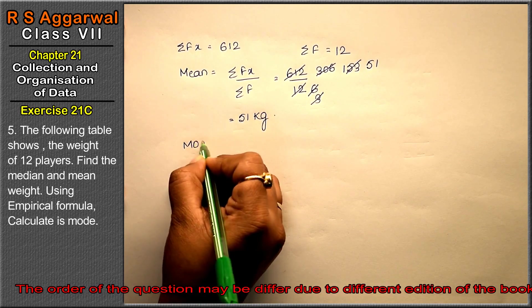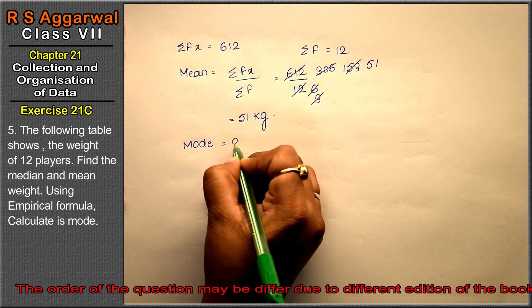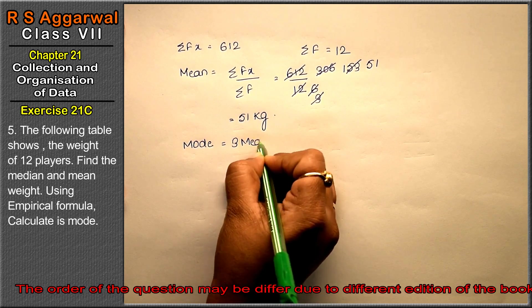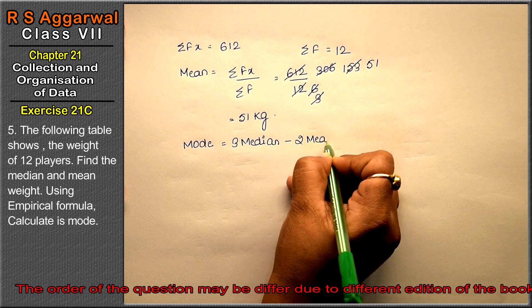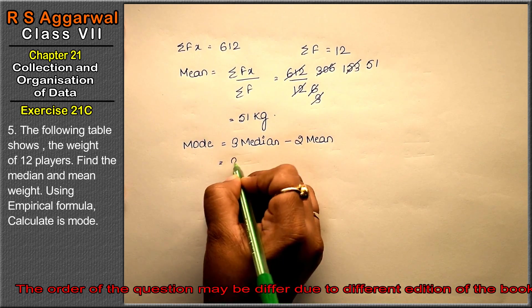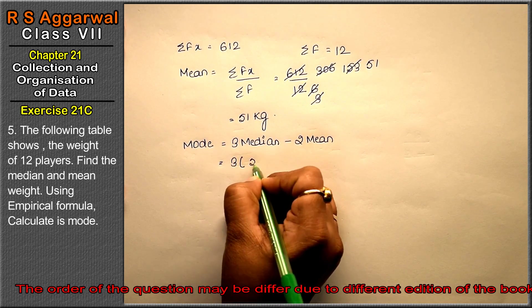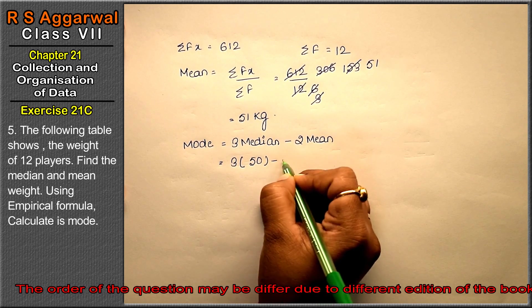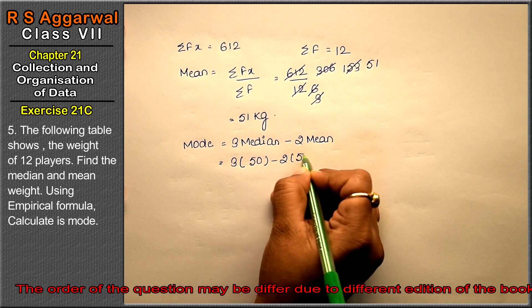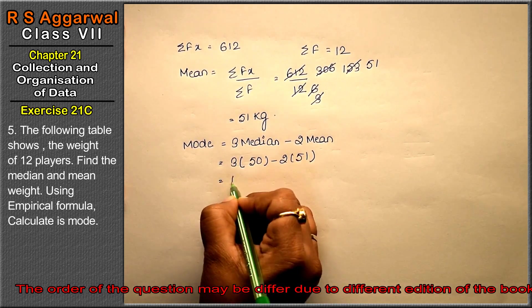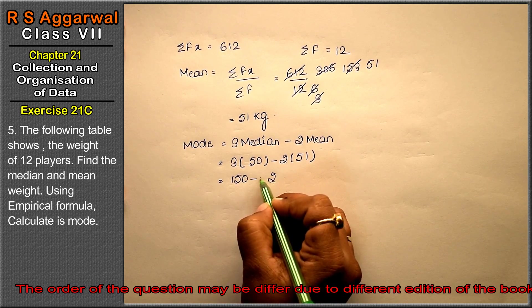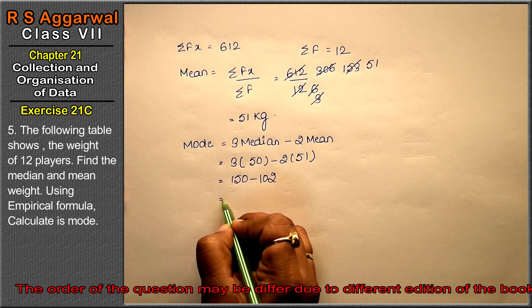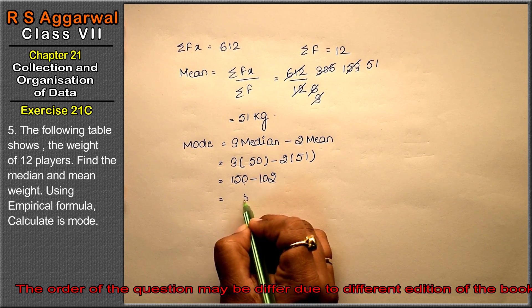Now mode formula: thrice median minus twice mean. Median is 50 kg and mean is 51 kg. Thrice gives 150, minus 2 ones are 2, 2 fives are 10, so 10 minus 2 is 8, and 4 minus 0 is 4. 48 kg is the answer.